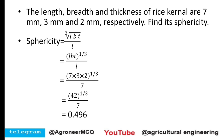Another example: the length, breadth, and thickness of a rice kernel are 7 mm, 3 mm, and 2 mm respectively. Find the sphericity. Using the formula sphericity = cube root of (l × b × t) / l = cube root of (7 × 3 × 2) / 7, you get 0.496. Whenever l, b, and t values are provided, use this formula.